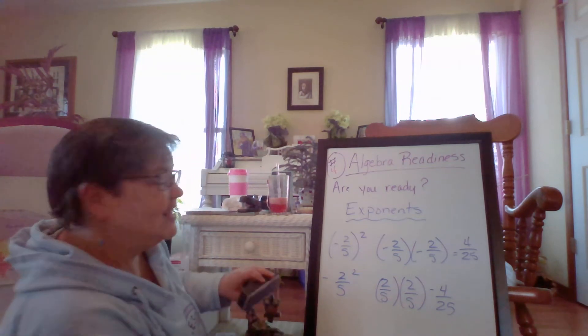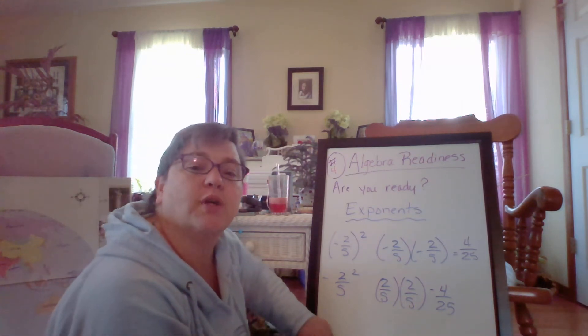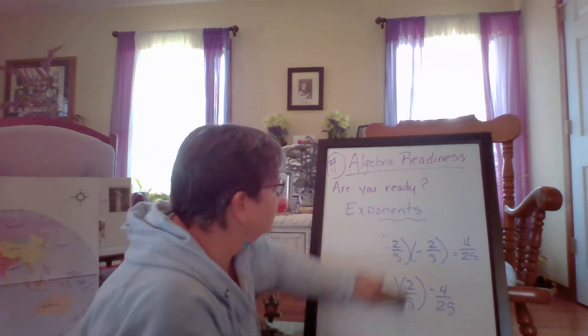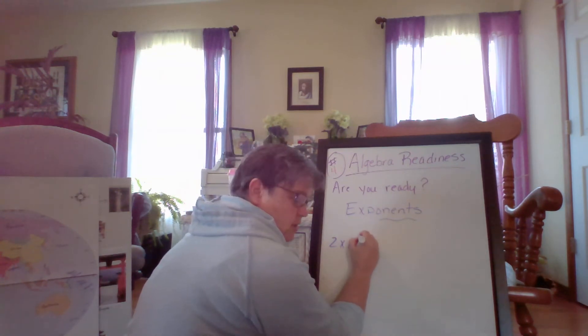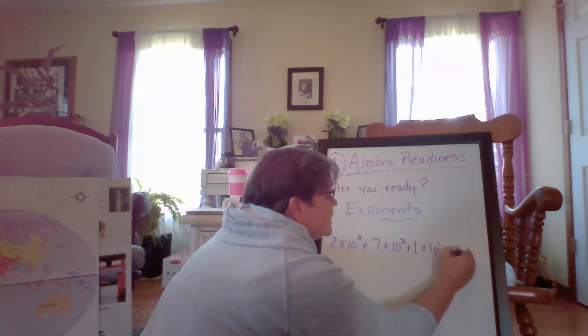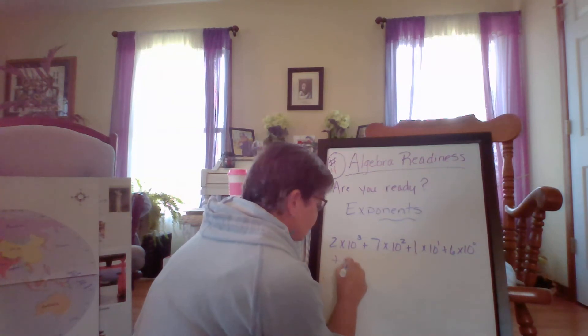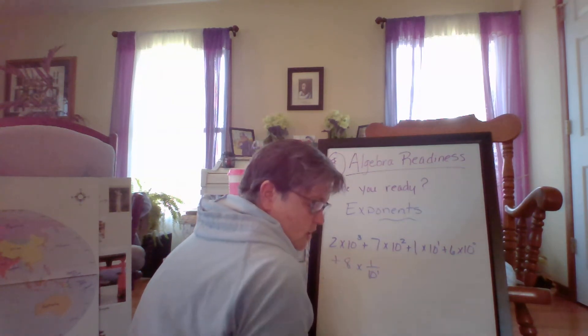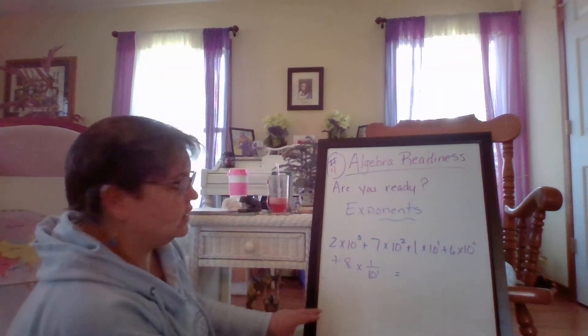All right, let's do, well, you guys do some chemistry, you'll just love expanded notation or scientific notation as it's called. So we're going to do one of those before we end for today. I have two times ten cubed plus seven times ten squared plus one times ten plus six times ten to the zero, I'll talk about that, plus eight times one-tenth. All right, equals. I should have made it a little bit smaller.